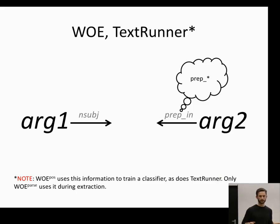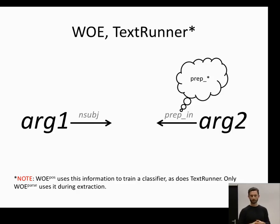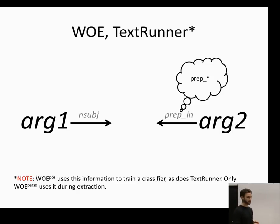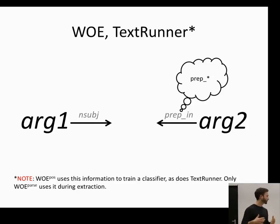WOE and TextRunner have an opposite approach: they start with the arguments and then work inwards to identify the relation. In TextRunner, when running online, it uses a naive Bayes classifier, likewise with WOE part-of-speech, but during their training phases this is the approach they use. What's interesting about WOE is this generalization idea where it takes parts of speech and the patterns it finds and throws them away — replacing a specific preposition like 'in' with 'preposition star' — giving a pattern that works in more types of places.